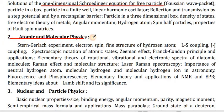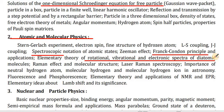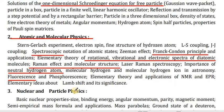Point 2 — Atomic and Molecular Physics: Stern-Gerlach experiment, electron spin, fine structure of hydrogen atom, L-S coupling, j-j coupling, spectroscopic notation of atomic states, Zeeman effect, Franck-Condon principle and applications, elementary theory of rotational, vibrational, and electronic spectra of diatomic molecules, Raman effect and molecular structure, laser Raman spectroscopy, importance of neutral hydrogen atom, molecular hydrogen and molecular hydrogen ion in astronomy, fluorescence and phosphorescence, elementary theory and applications of NMR and EPR, elementary ideas about Lamb shift and its significance.